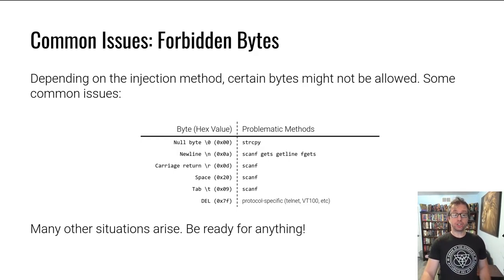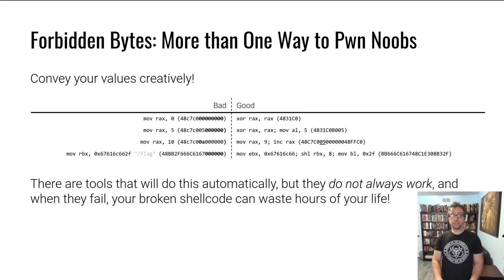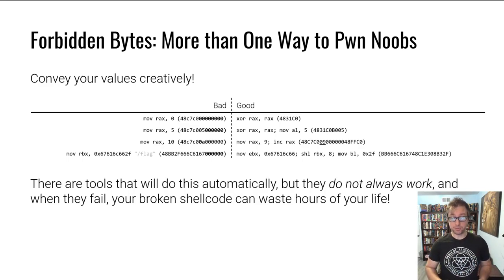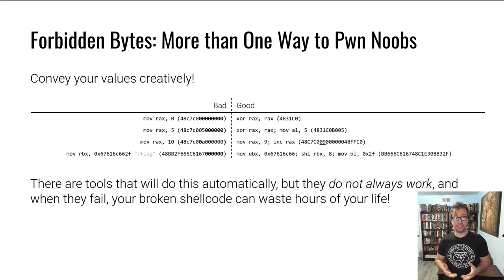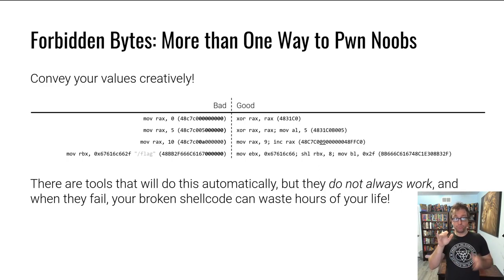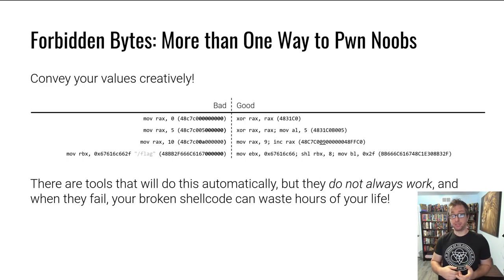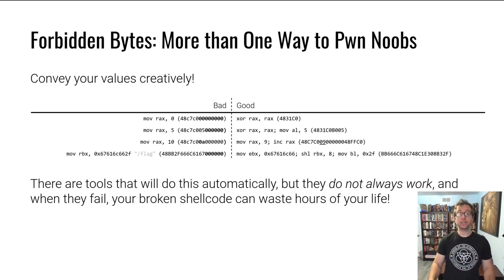So how do you make sure your shellcode doesn't contain these bad characters? There are a lot of ways to express the same thing in assembly, just like in C or Python. Here are a couple of bad-to-good examples. At the top, we do MOV RAX, 0 — you want to write zero into RAX. This has a ton of null bytes because it moves a 64-bit zero value, which is eight bytes of zeros. Instead, you can replace it with XOR RAX, RAX, which clears out RAX, sets it to zero, and is much shorter.